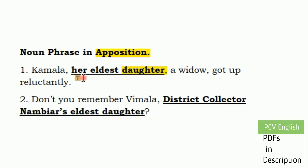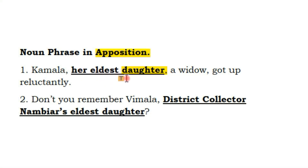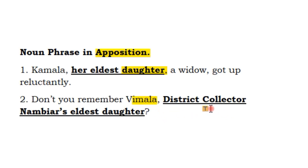Noun phrase in apposition. What is noun phrase? Noun phrase is noun phrase. 'Daughter' is the noun. 'Her eldest daughter' — what is the noun phrase? District collector's eldest daughter. 'Daughter' is the noun. The first one is 'daughter,' but the full noun phrase 'the eldest daughter' is the second one.